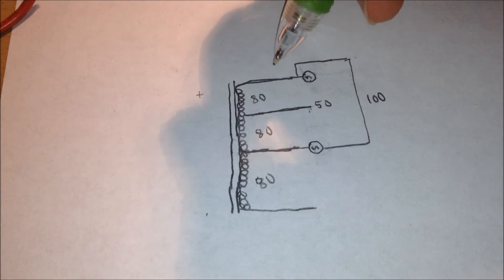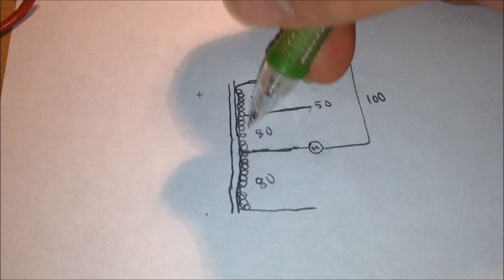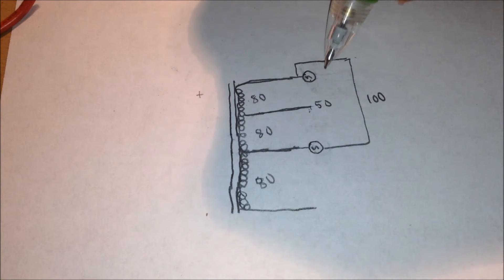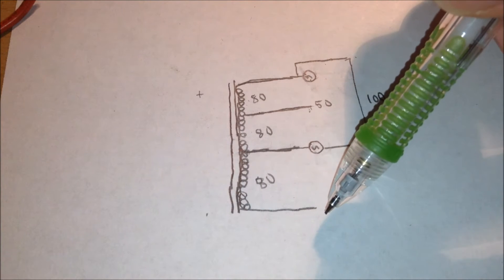And so this works as an autotransformer. Depending on the coil ratios between the two input voltages, you can get a different output voltage. Now another cool thing about autotransformers is you can also step up the voltage.